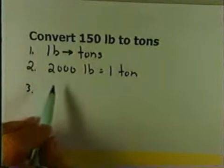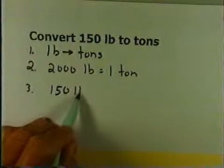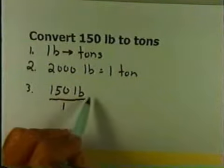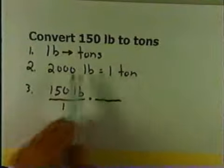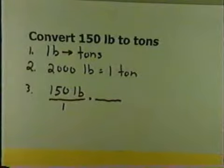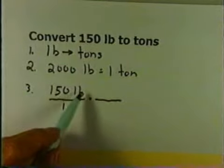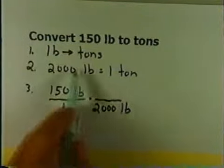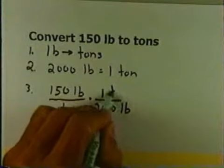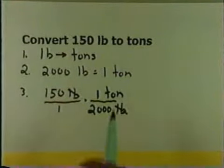The third step: you form your multiplication chain. You always start with the given quantity over 1. Now you multiply by your conversion fact — one part goes on top, one goes on the bottom. You decide what goes on the bottom based upon what you're trying to cancel. I'm trying to cancel pounds and be left with tons. So if I want to cancel pounds from the numerator, I have to put pounds in the denominator, meaning the 2,000 pounds goes in the denominator. The one ton is left in the numerator. Pounds will cancel, so my answer is in tons.